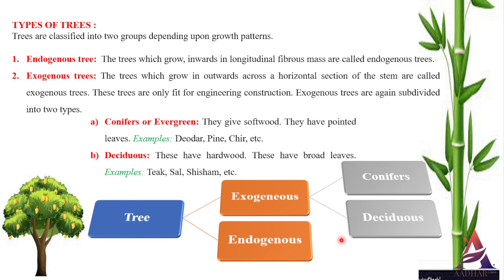Number two: exogenous trees. The trees which grow outwards across a horizontal section of the stem are called exogenous trees. These trees are fit for engineering construction. These trees increase in bulk by growing outwards, and distinct consecutive rings are formed in the horizontal section of such a tree. These rings are known as annual rings because one such ring is added every year, and these rings are useful in predicting the age of a tree. The timber which is mostly used for engineering purposes belongs to this category.